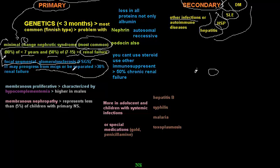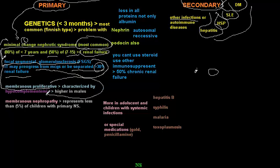Focal segmental glomerulosclerosis may arise as a progression from minimal change nephrotic syndrome, or it may start independently. It leads to renal failure in about 30% of cases. The third type is membranous proliferative nephrotic syndrome, which is characterized by reductions in complement products such as C3 and C4.